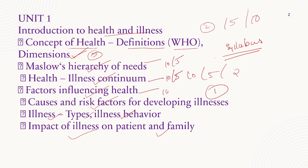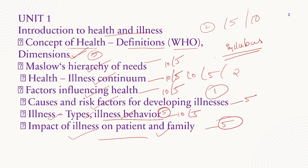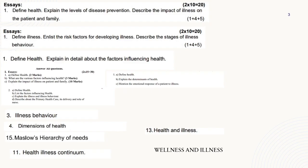Factors influencing health: 10 mark, 5 mark. Causes and risk factors of developing illness: 5 mark. Illness: 10 mark, 5 mark. Illness behavior: 5 mark. Impact of illness on patient and family: 5 mark. These are the questions — I directly cropped and took from your previous year questions, what they asked from the first unit. 10 mark.